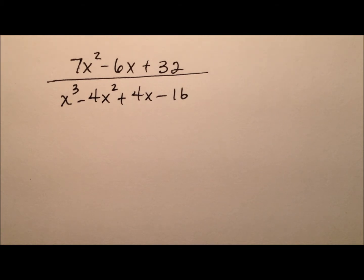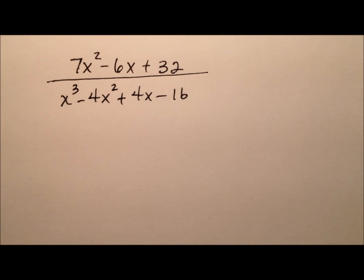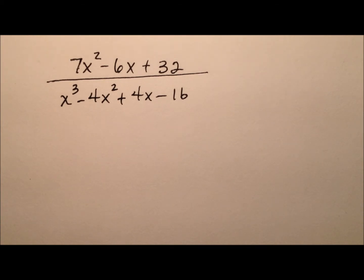When the denominator has a linear factor, the numerator we assign to it for its partial fraction is merely a constant. The big thing here is that when we have a quadratic factor, the partial fraction numerator will end up being a linear factor — like ax plus b. Any quadratic repeated factors will be treated exactly the same way that linear repeated factors were. So let's get down to an example.